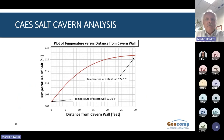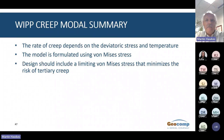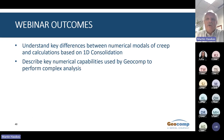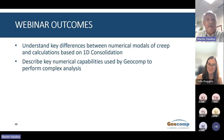This slide shows salt temperature versus distance from the cavern wall one year after cycling the pressure. The temperature effects beyond about 30 feet are negligible. In summary, the WIPP creep model is far simpler than the soft soil creep model, but the advantage is that creep rates are directly calibrated to deviatoric stress and temperature. The rate of creep depends on deviatoric stress and temperature, formulated using von Mises stress. The design should include a limiting von Mises stress that minimizes risk of tertiary creep. I hope you now understand key differences between numerical models of creep and 1D consolidation calculations, and I hope this has deepened your understanding of the numerical modeling of creep. Thank you for attending — I will now take any questions.